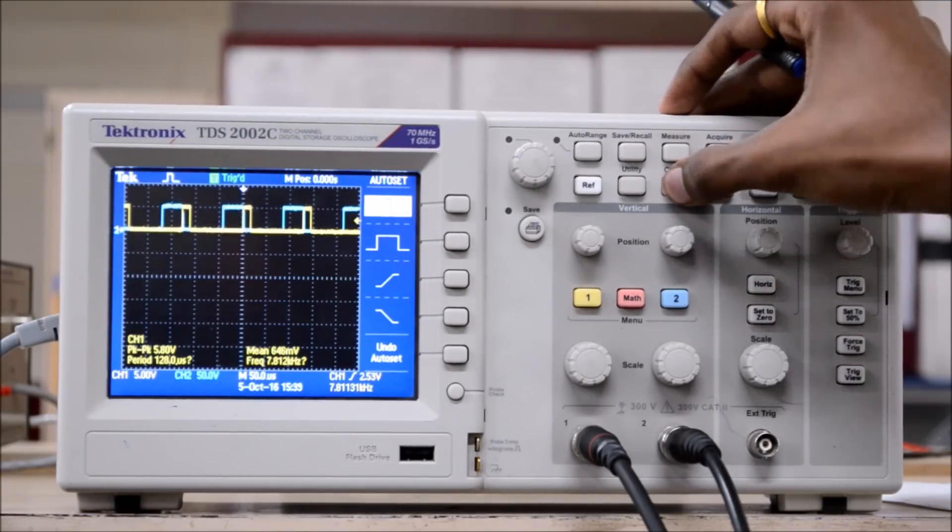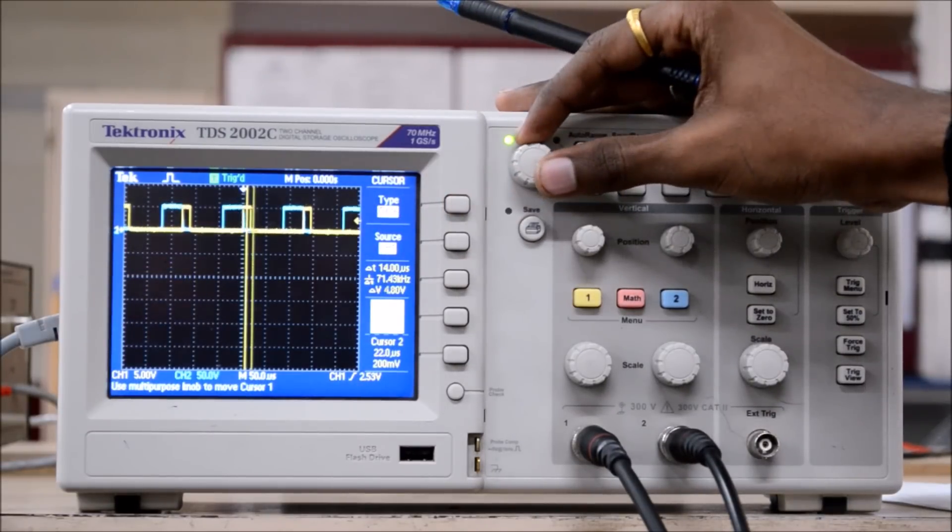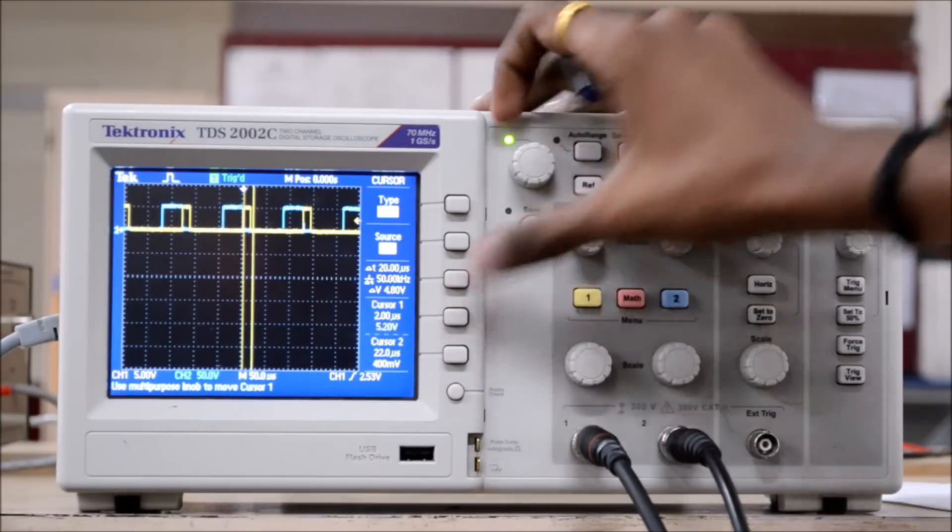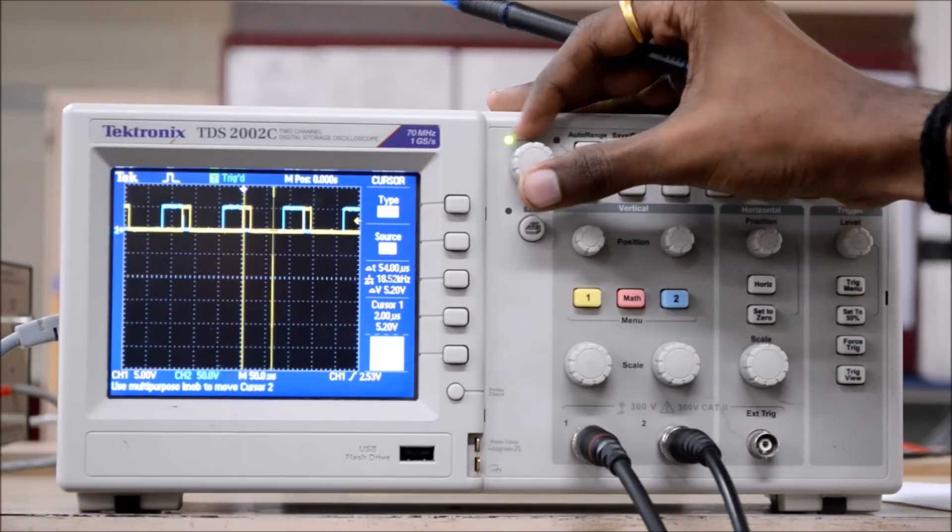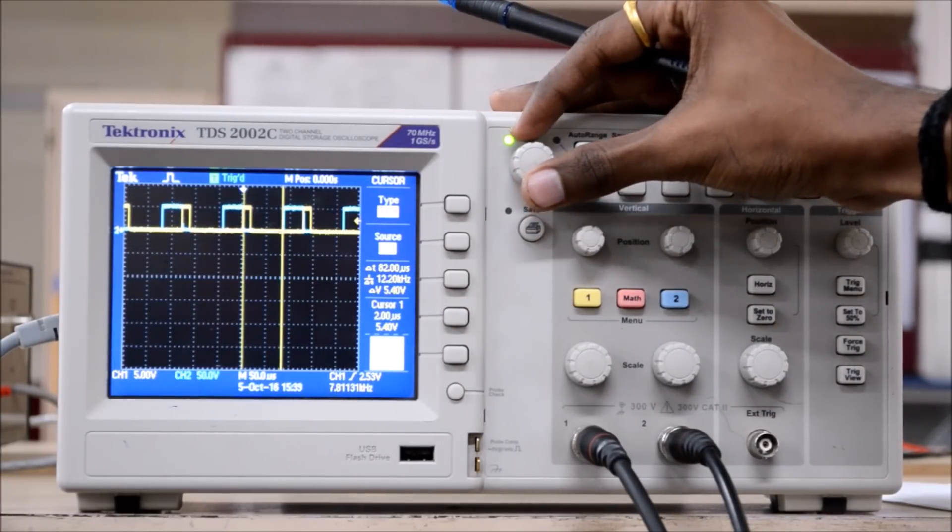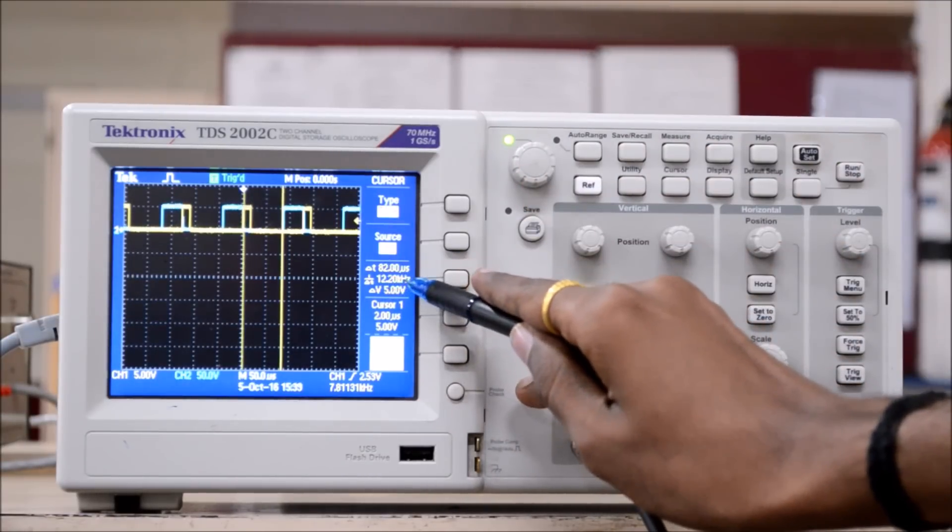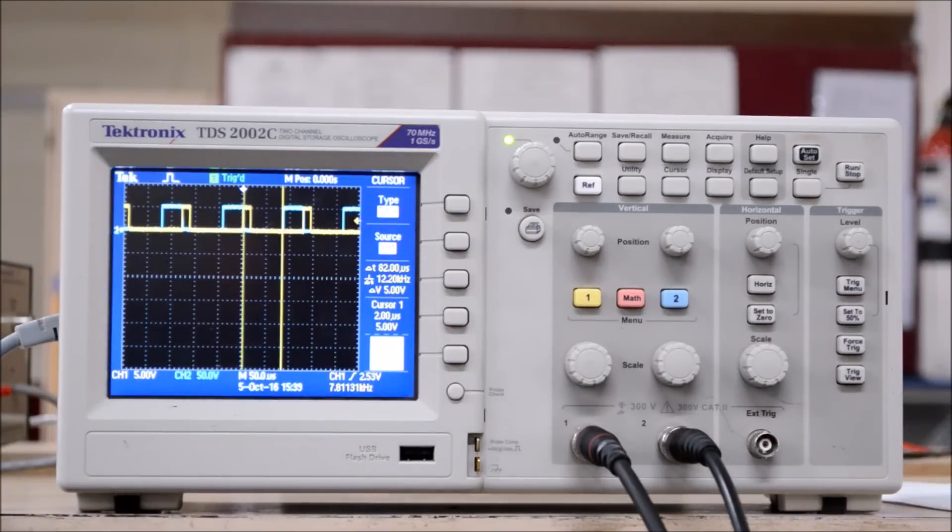So for that purpose, I will be using cursors. With this, I am getting the conversion time delta T as 82 microseconds which is perfect.